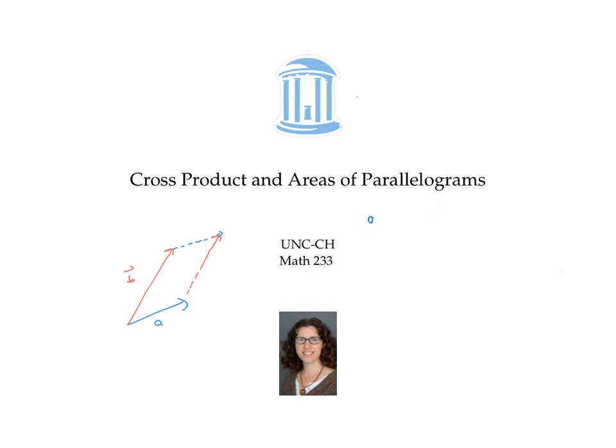In this video, we found that the area of the parallelogram spanned by vectors A and B is given by the magnitude of the cross product A cross B.